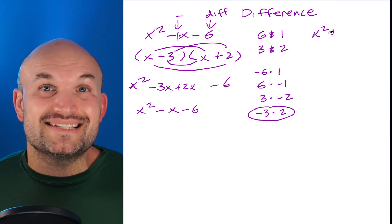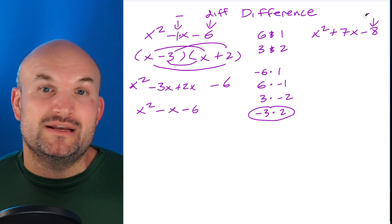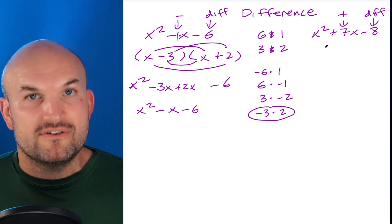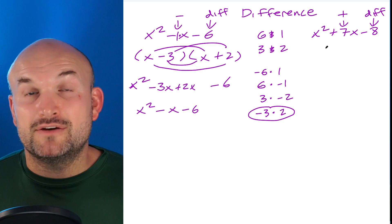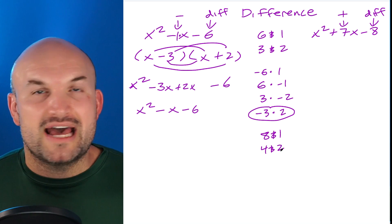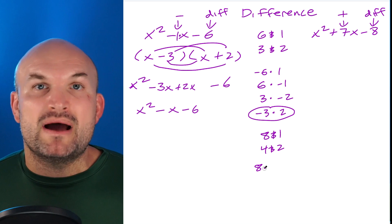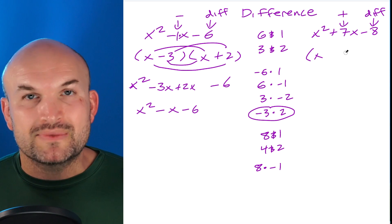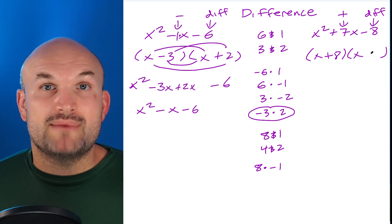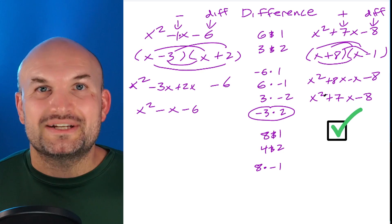In the next example, x² + 7x − 8, the last term is negative so I'm again looking for a difference. The middle term is positive, so I need a positive difference. The positive factor pairs of 8 are (8, 1) and (4, 2). Only 8 and 1 have a difference of 7. Since the middle term is positive, the 8 must be positive and the 1 must be negative. Switching the signs would give a difference of −7. I plug in 8 and −1 as my factors and multiply it out to confirm.